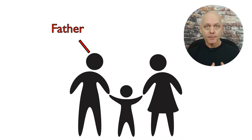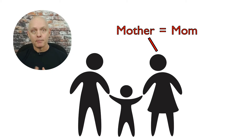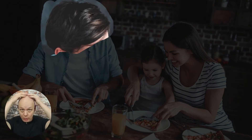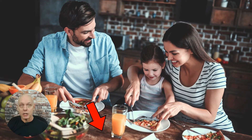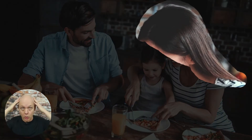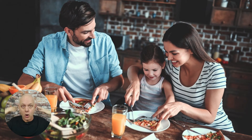Another word for father is dad. Another word for mother is mom. The father has brown hair — his hair is brown. This wood is brown. He also has a brown beard. The mother has long, long brown hair. Her hair is long and it is brown, like the father's hair.